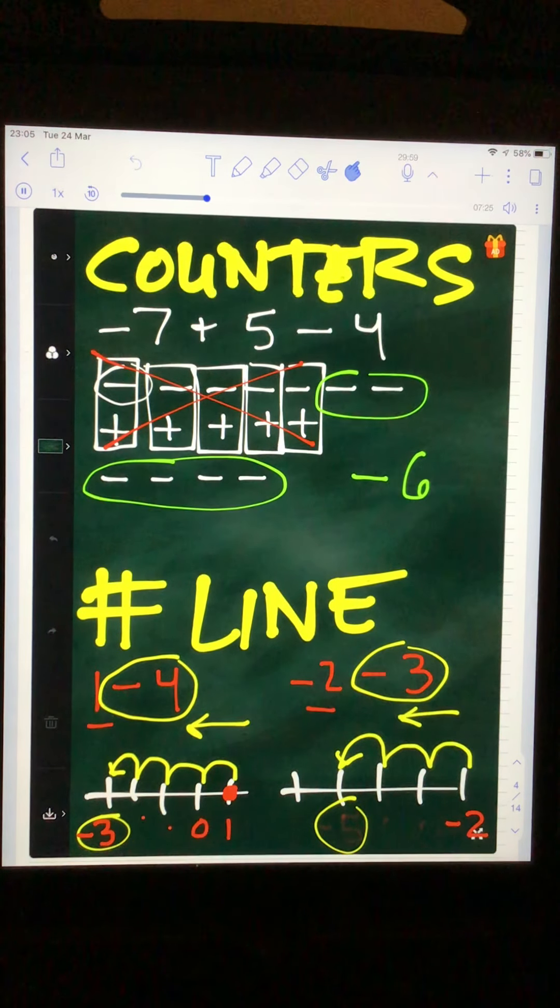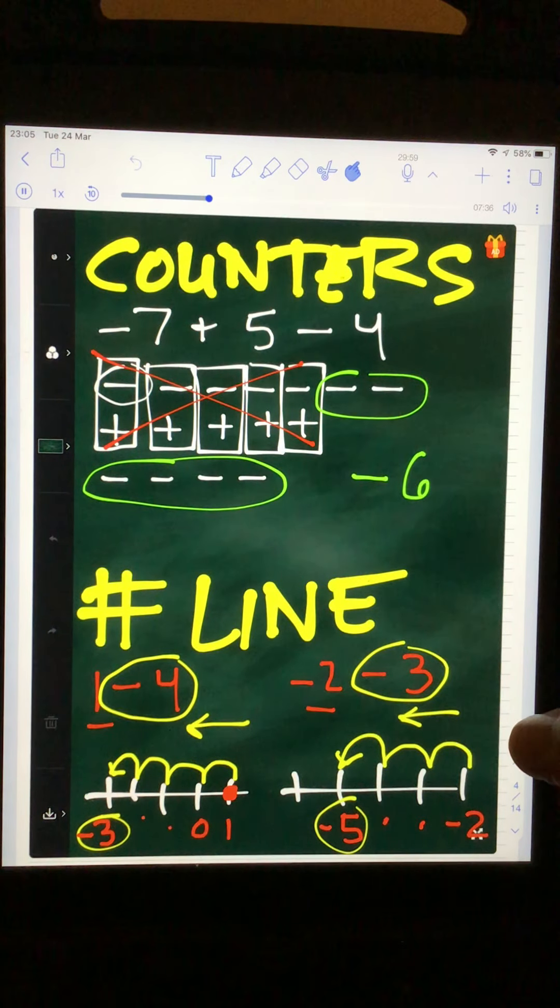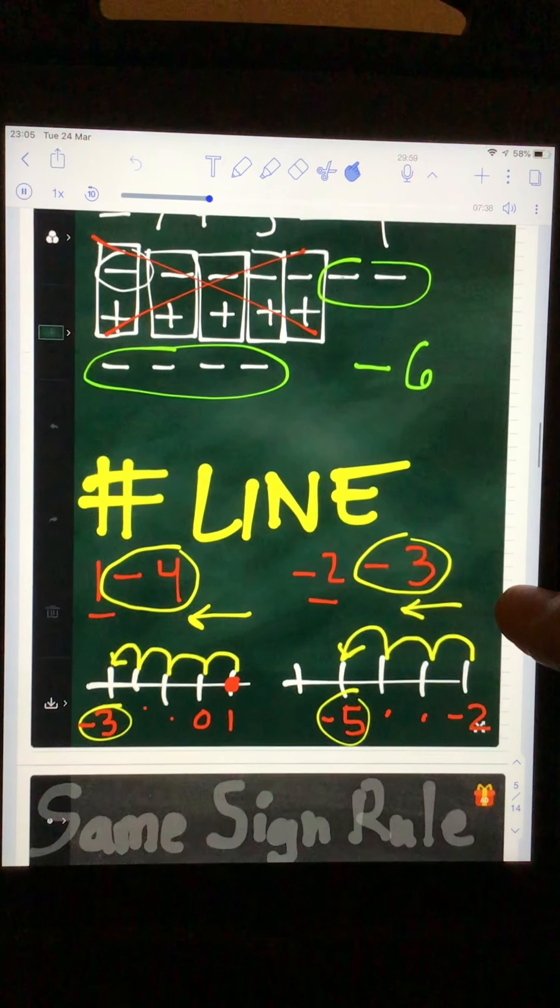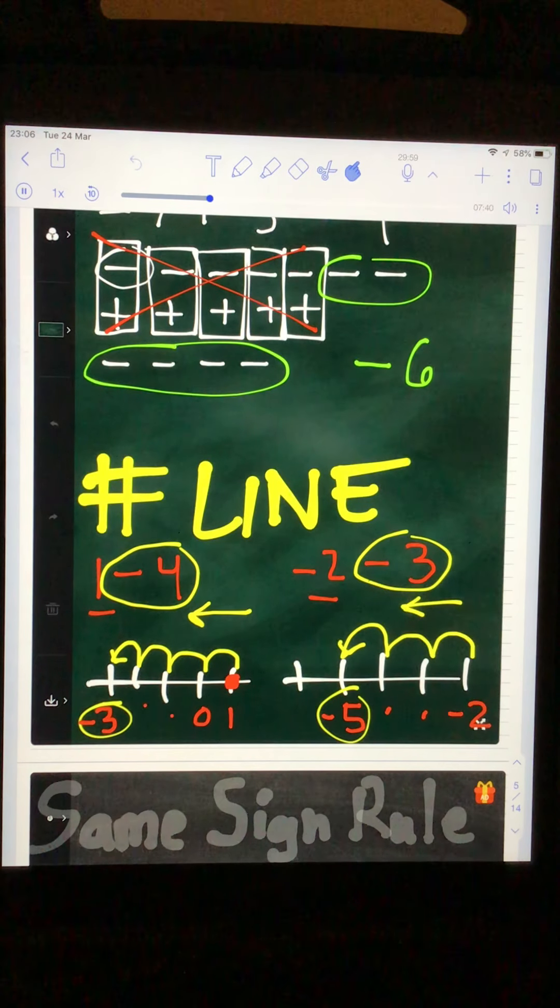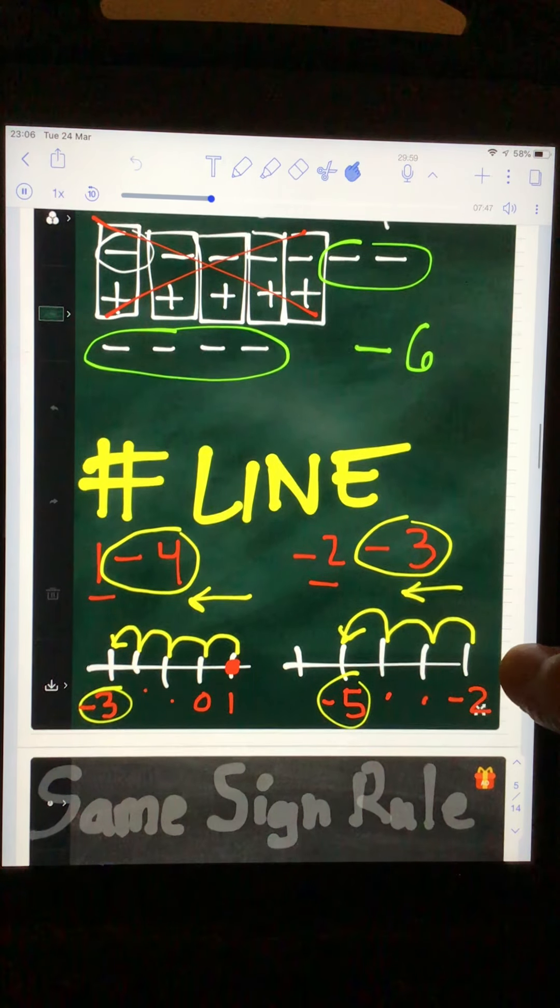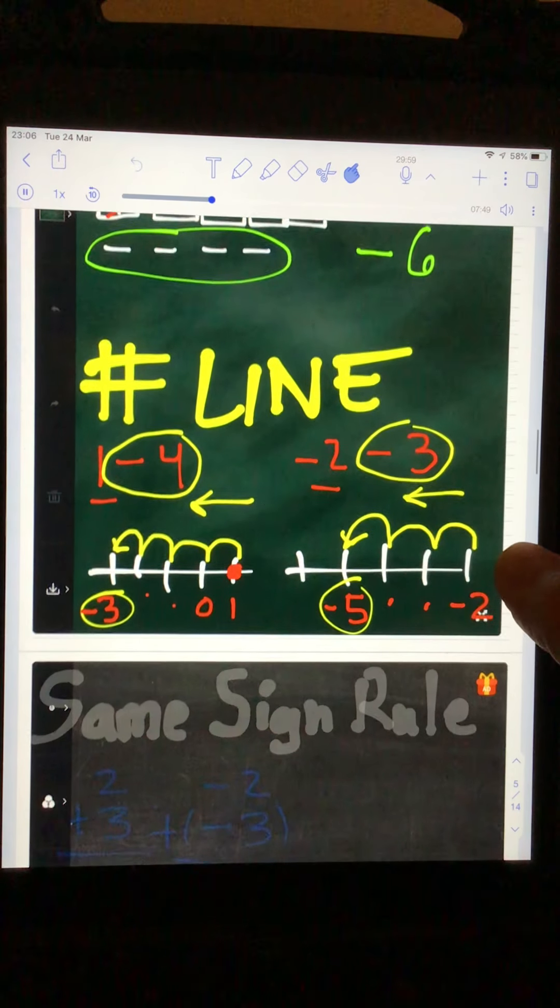And then from there, it's telling me to go minus 3, which again is to the left. So I'm going to bunny hop three spots that direction. 1, 2, 3. Where did I end up? That's going to be my answer. So I'm going to count my way over. Negative 2, negative 3, negative 4, negative 5 is my answer. Simple enough. Let's move on to the next strategy.